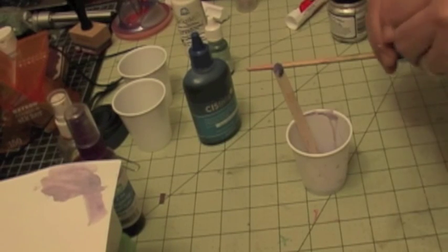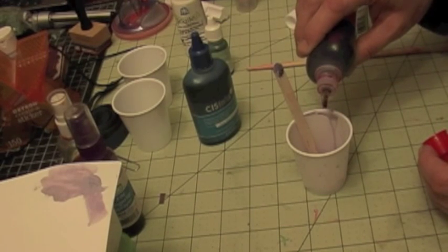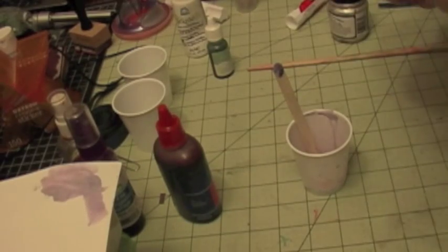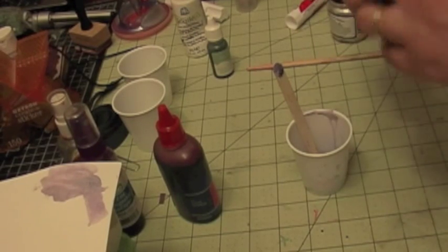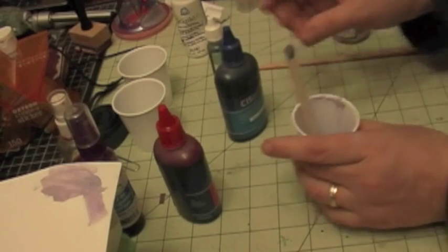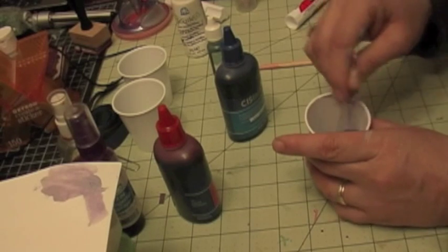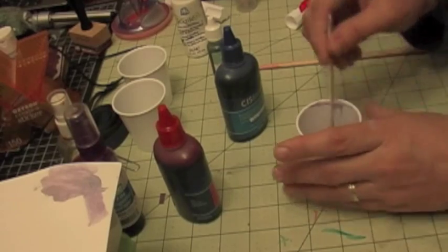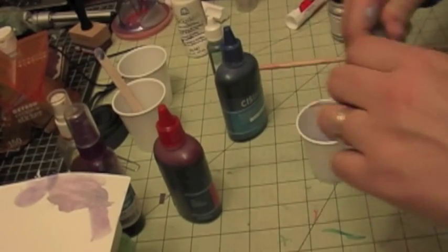I might want to make it a little more intense. So let me go ahead and put one, two, three. Because I really want an intense purple color. One, two, three. And then mix it. And you keep adding and mixing until you get the desired color you want. About the same. So now I'm ready to put it in my mister.